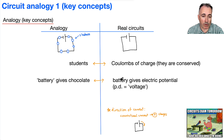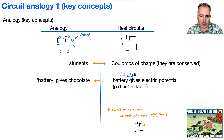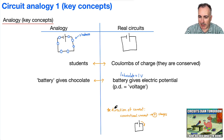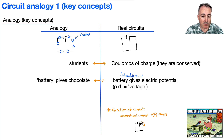One piece of chocolate equals one volt. The student who gives out chocolate represents the real battery, which gives out potential difference — it gives out volts. The direction of current is the conventional current, which is the direction of positive charges. This is the positive terminal and this is the negative terminal of a battery, so the circuit current goes in that direction.